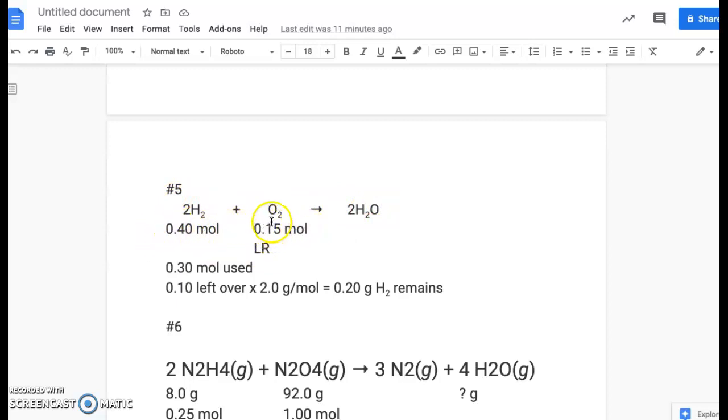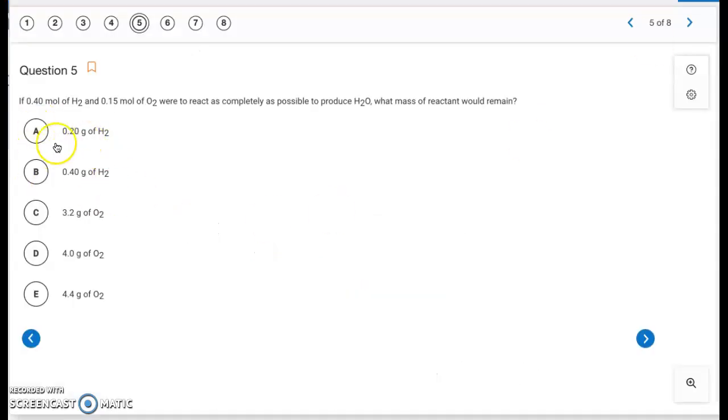This is the given moles of each. So the 0.15 moles of O2 would need 0.3 moles of H2. So you have excess H2, and O2 is your limiting reactant. O2 is going to run out first. So then according to this, you have 0.3 moles of this H2 are used up in the reaction. So that means 0.1 moles is left over. Multiply that by the molar mass. You end up with 0.2 grams of H2 remaining. So we'll go back to our choices. It's going to be letter A.